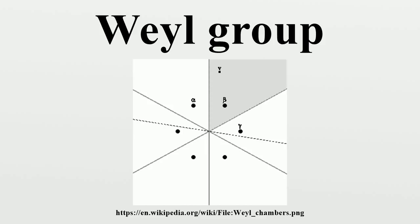Definition: the Weyl group can be defined in various ways depending on context, and a specific realization depends on a choice of Cartan subalgebra for a Lie algebra, or of maximal torus for a Lie group. The Weyl groups of a Lie group and its corresponding Lie algebra are isomorphic, and indeed a choice of maximal torus gives a choice of Cartan subalgebra. For a Lie algebra, the Weyl group is the reflection group generated by reflections in the roots.